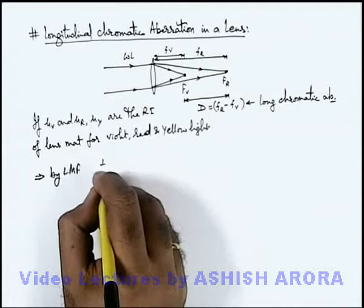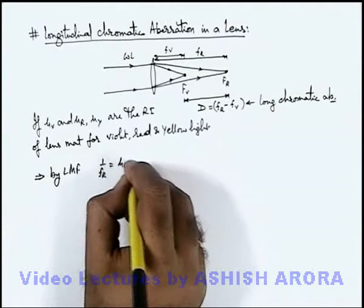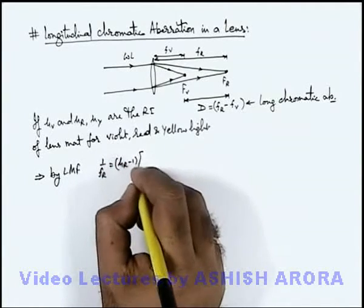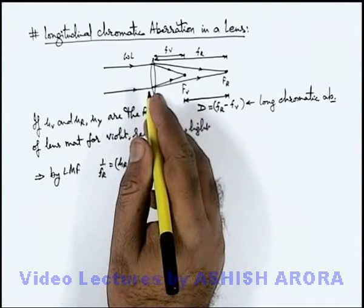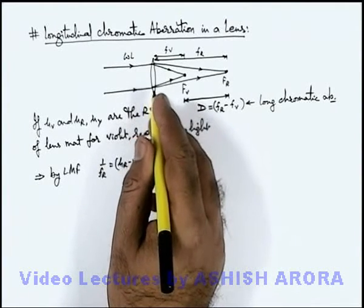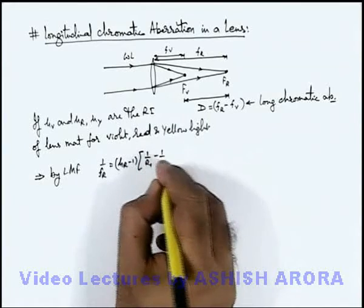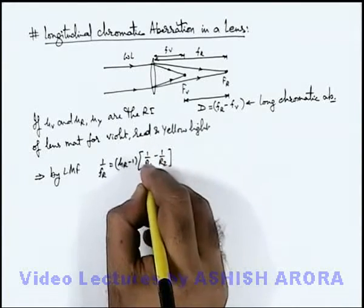the focal length for red light will be mu_r minus 1, and if it is considered to be a convex lens we can write 1/r_1 minus 1/r_2, and if it is considered to be